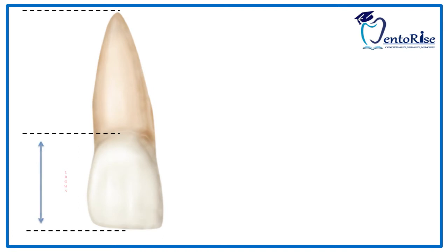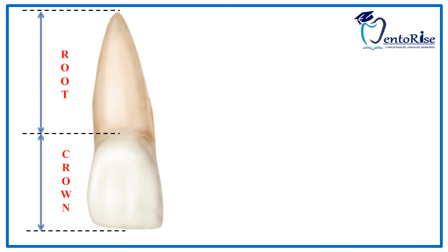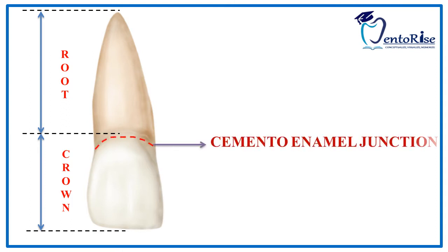Every tooth has a crown and a root portion. The outer layer of the crown is made up of enamel and the outer layer of the root is made up of cementum. The junction of the two, as demarcated here in red, is called the cemento-enamel junction, which is also called the cervical line.